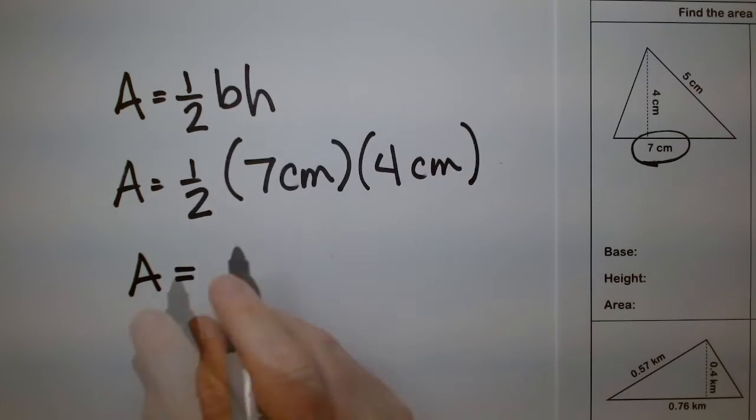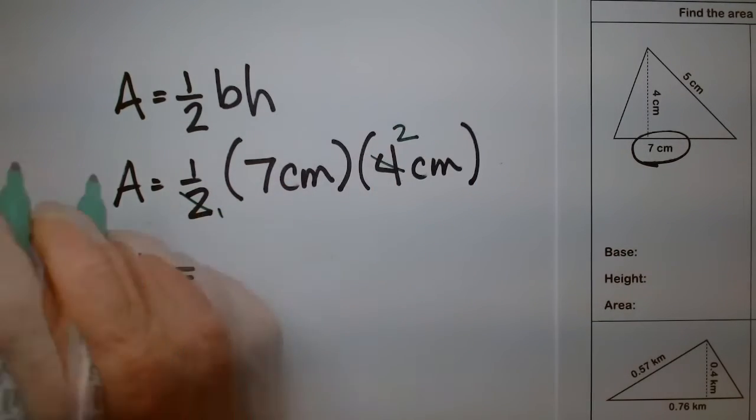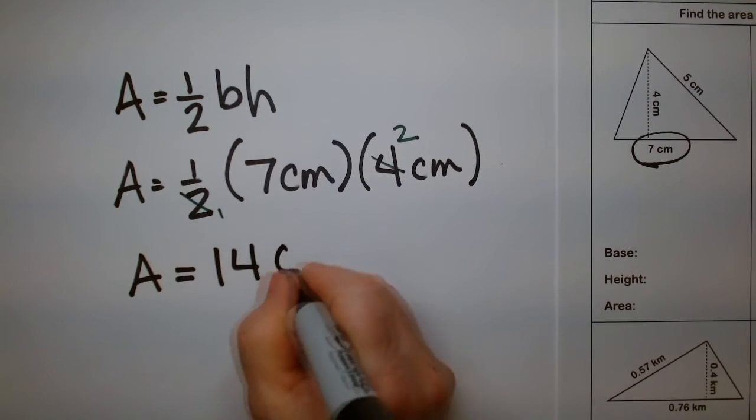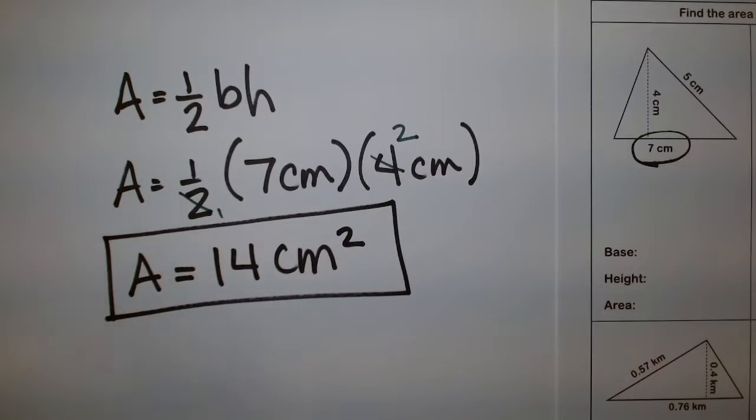I can simplify this before multiplying it out. I can say 4 over 2 actually becomes a 2 here. There's a 1. And so 7 times 2 is 14, and the units are centimeters squared.